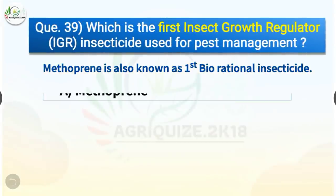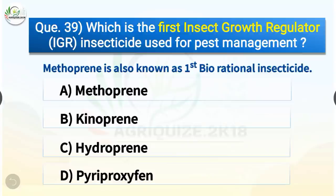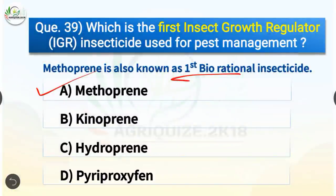Question number 39. Which is the first insect growth regulator (IGR) insecticide used for pest management? The options are methoprene, kinoprene, hydroprene, or pyriproxyfen. The correct answer is option A, methoprene. Methoprene is the first IGR insecticide used for pest management and is also known as the first biorational insecticide. A biorational pesticide causes relatively no harm to humans or animals. Methoprene is a juvenile hormone analog and does not kill insects directly but interferes with the insect's life cycle, preventing it from reaching maturity or reproducing.